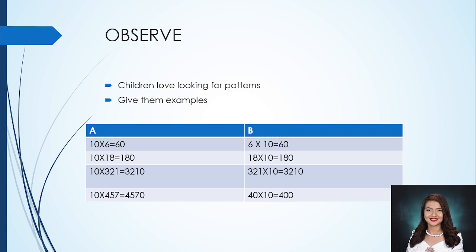For example, in set A, we have 10 multiplied by 6, and the answer is 60. Both sets will lead students to discover that the technique in multiplying by 10 is placing a 0 after the number being multiplied.